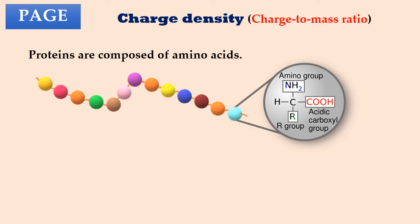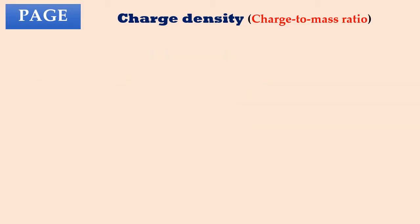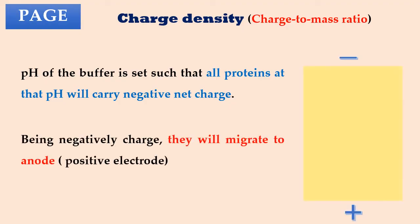Another important point here is, the net charge carried by a protein molecule depends on pH of its surroundings. So, the net charge on a protein molecule can be positive, negative or neutral at a particular pH. In gel electrophoresis, pH of the buffer is set such that all the protein molecules at that pH will carry a negative net charge. Being negatively charged, these protein molecules will migrate to the positive electrode or anode.